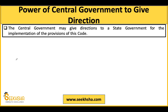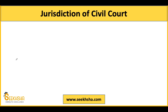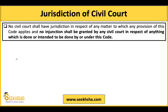Some miscellaneous provisions: the central government can direct the state government to follow any provision written under this code if the state government is not complying — for example, directing them to create a toll-free number for interstate migrant workers. Additionally, no jurisdiction has been given to civil courts, meaning if any provision of this code is being violated, you cannot take that matter to a civil court.